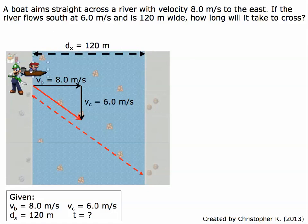So what Luigi's going to see Mario do, instead of going straight across like that, because it's going to be pushed down by the current, Mario's going to be going across the river something like that.